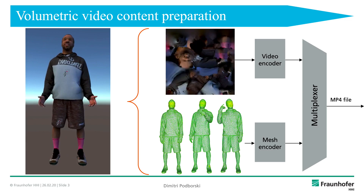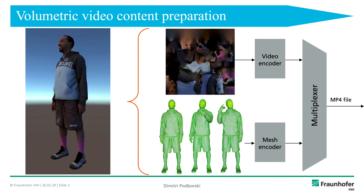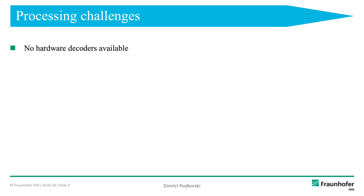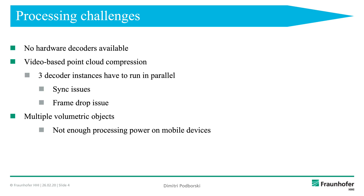On the client device, when you would like to render your volumetric video, you have to do those steps in reverse order. The biggest problem currently is that there are no hardware decoders available which can deal with volumetric video. There is some effort in MPEG utilizing video decoders — specifically video-based point cloud compression — which is really good. However, this still has problems because you have to run several decoder instances in parallel, which may have synchronization issues or frame drops. And if you deal with multiple volumetric objects on the client device, it gets really complicated if you use just three decoder instances for a single video.